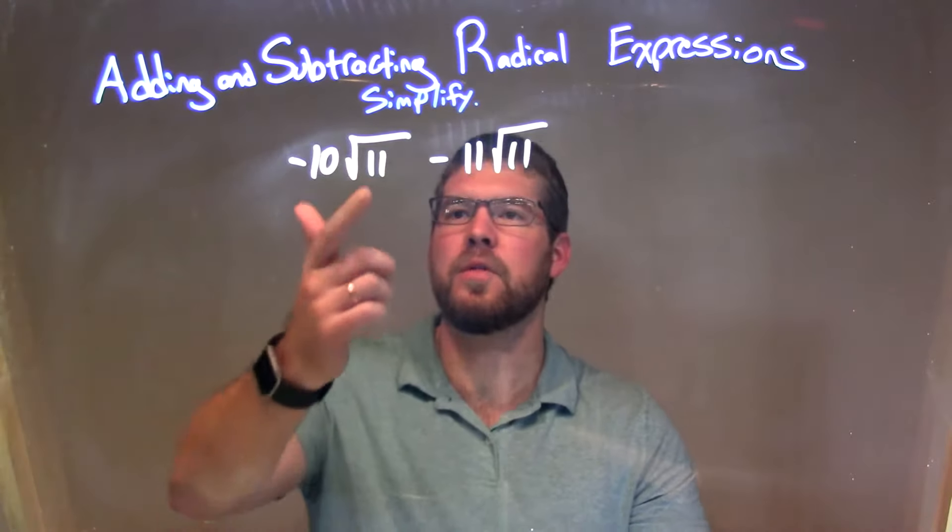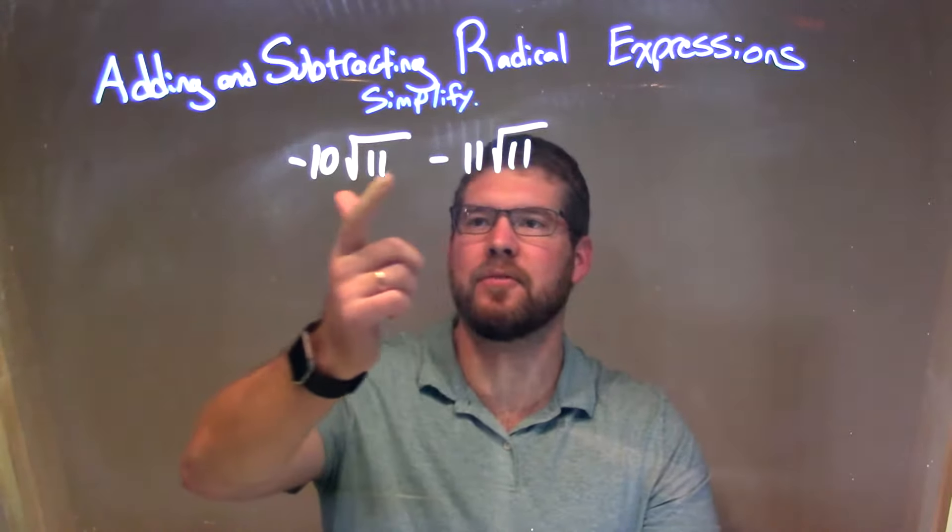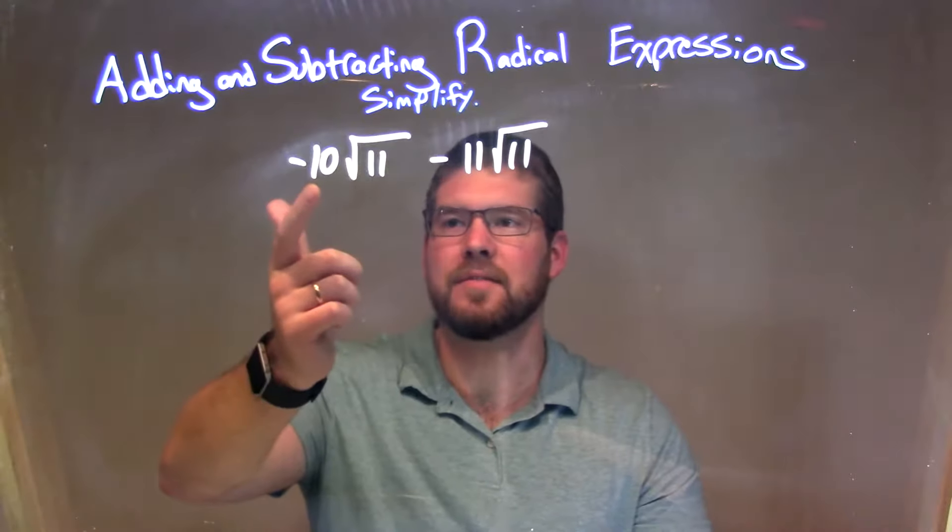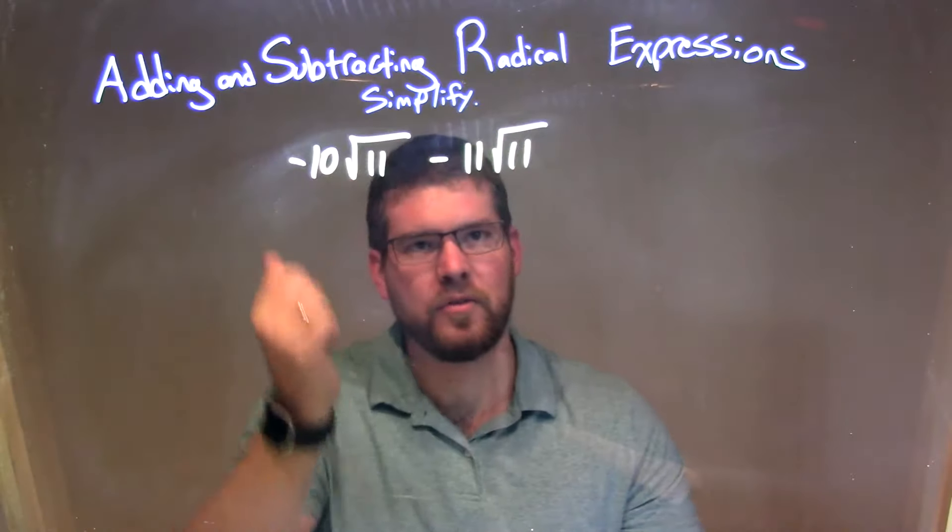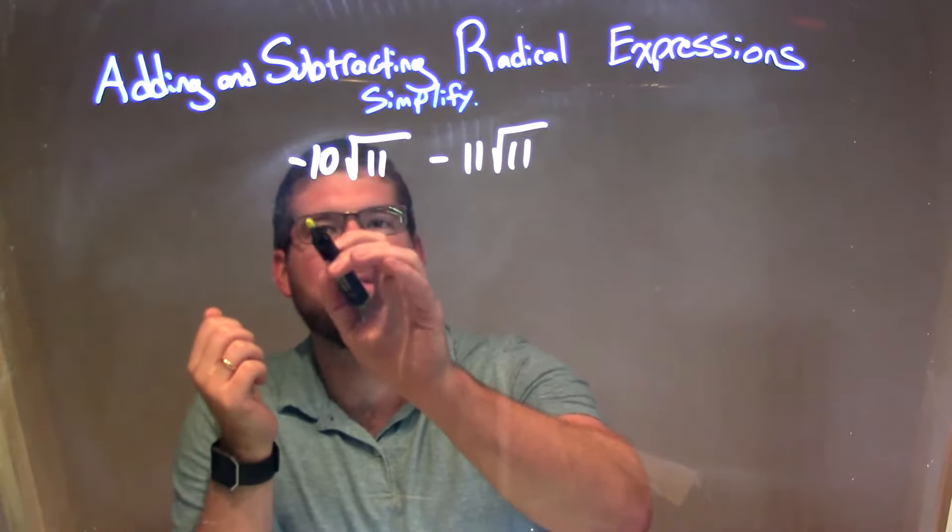Well, since both of these have the same square root of 11 right there, we multiply by some number, this one negative 10, this one negative 11. Since they're the same, we just look at the number in front of the square root of 11, and we add them together.